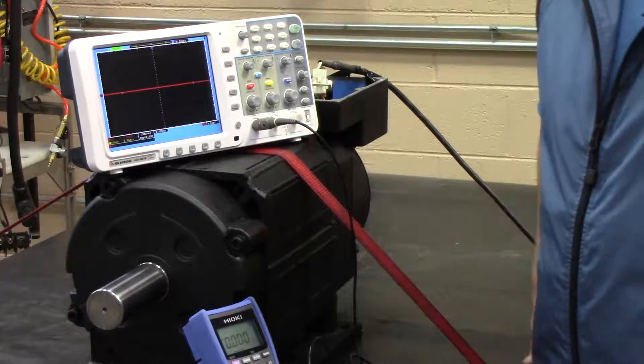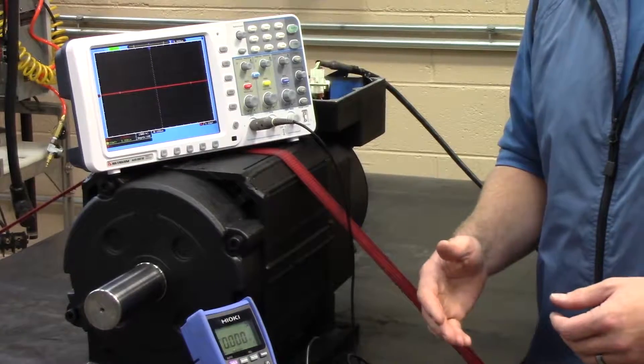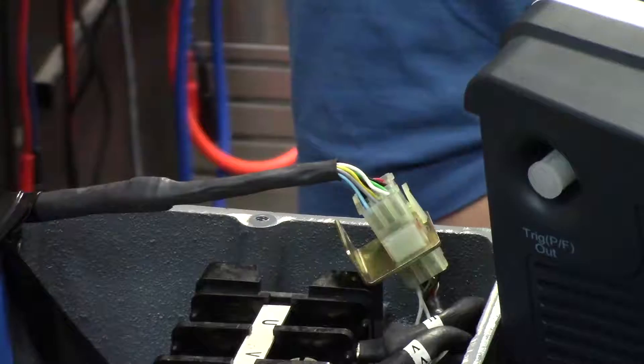Now pin 1 is always going to be red and that's your 5-volt positive. Pin number 2 is right next to it. That's going to be your black, which is your negative.